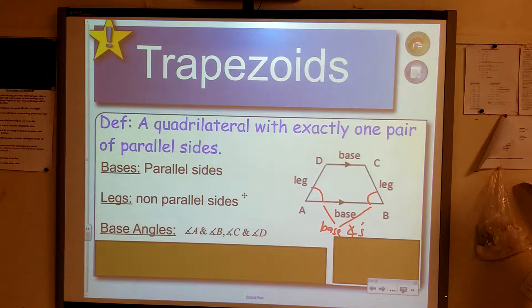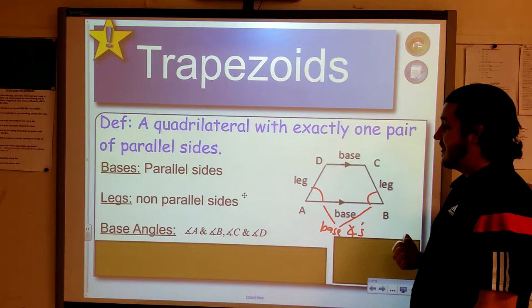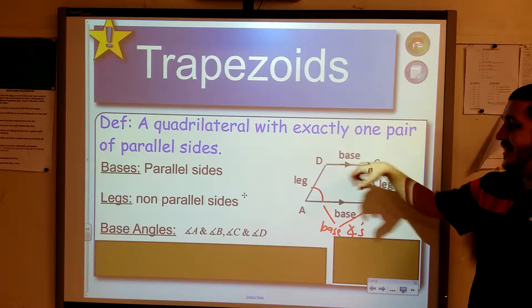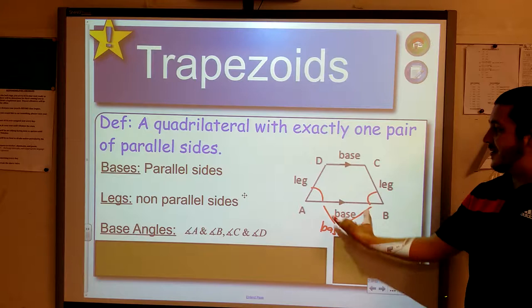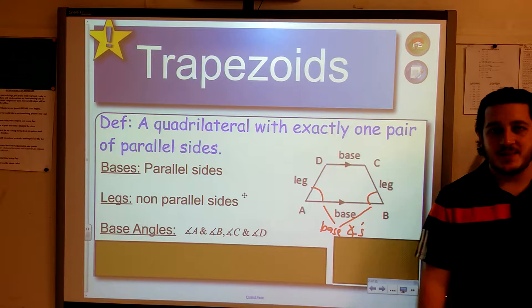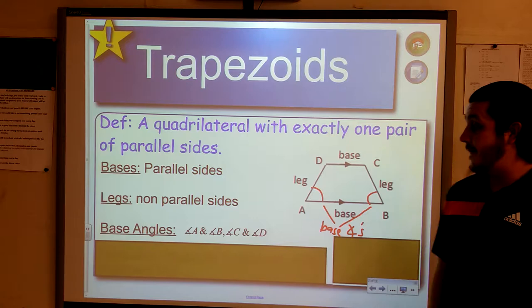You have your base angles. Base angles are based off of the base. So, you have our bottom base here with our legs. A and B are one set of base angles. They go together, they're on the same base. You have your top base here with the same legs. Angle C and angle D are also your other set of base angles. So, you have two sets. Base angles are angles that are created with the same base.